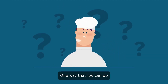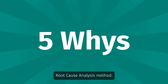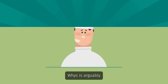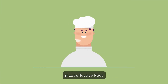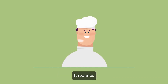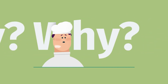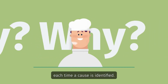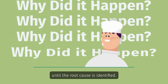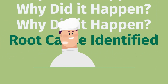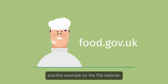One way that Joe can do this is to use the five whys root cause analysis method. The five whys is arguably one of the simplest yet most effective root cause analysis methods. It requires Joe to ask a series of why questions. Each time a cause is identified, the question 'why did it happen?' is applied until the root cause is identified. So let's try it using the best practice example on the FSA website.